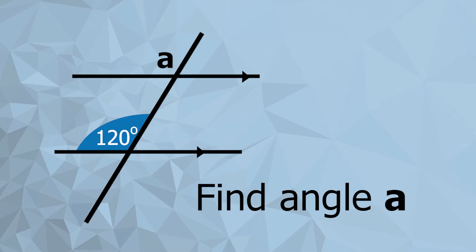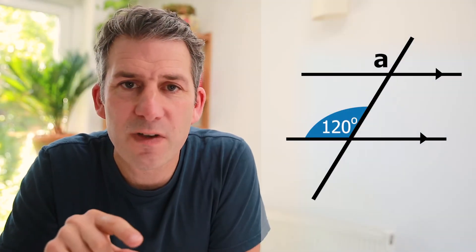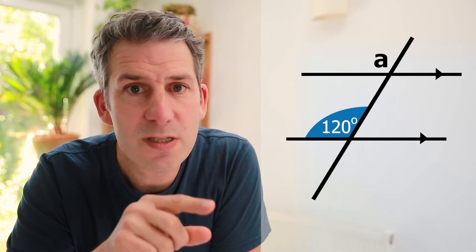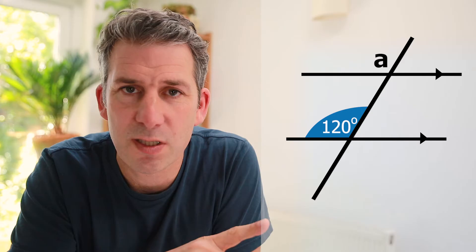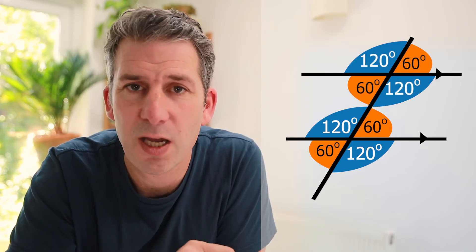In this example we're being asked to find the missing angle A. One easy way to do that would be to use all the skills we've developed so far — we could find the three missing angles at the bottom. We've got angles on a straight line so we know that one is 60 degrees, and then the other two are vertically opposite so we get 60 degrees again and 120 degrees again. We know all four angles at the top are going to be exactly the same, so angle A must be 120 degrees.